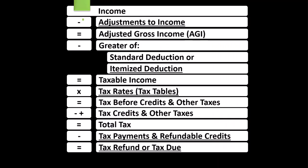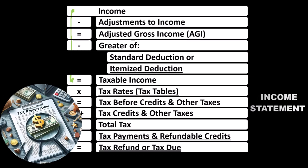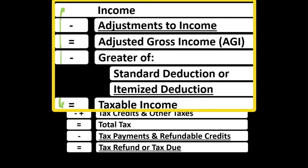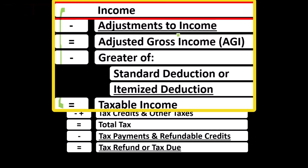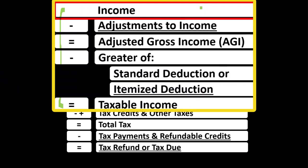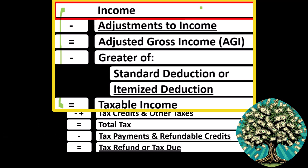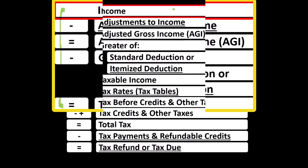Looking at our income tax formula, the first half of the tax formula is basically an income statement. Most income statements have income minus expenses resulting in net income. Here we have income minus various deductions resulting in taxable income. The Sole Proprietorship Schedule C rolls into line one income of the formula. The Schedule C itself is basically an income statement: business income minus business expenses — also called business deductions — resulting in net business income, which rolls from the Schedule C to line one of the formula.